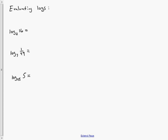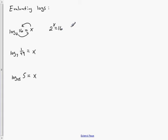Let's evaluate these and get actual answers. To evaluate a log, we always rewrite it as an exponential. For example, to evaluate log base 2 of 16, we ask: 2 to what power equals 16? Well, 2 times 2 is 4, times 2 is 8, times 2 is 16 — that's 2 to the 4th power equals 16. Therefore x equals 4.